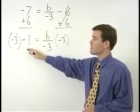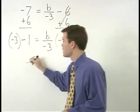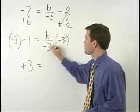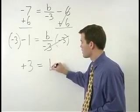On the left, negative 3 times negative 1 is positive 3, and on the right, our negative 3's cancel, and we're left with B.